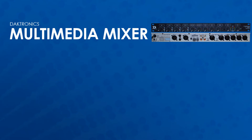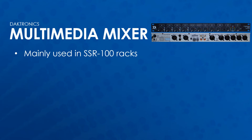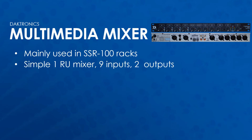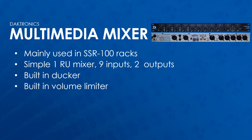The Daktronics multimedia mixer replaces the Rain MLM82S in the SSR100 rack. The multimedia mixer is a simple 1RU mixer with 9 inputs and 2 outputs. This mixer also has no equalization built in, but it has some additional features that greatly improve its functionality over the Rain. The built-in ducker, when turned on, causes all other inputs to drop in volume while someone is talking into the Mic 1 or Mic 2 input. The volume limiter can be enabled and set to one of two values to limit the output volume of the mixer, preventing sound system overload or excessive volume situations.